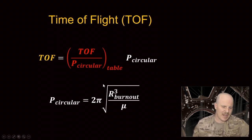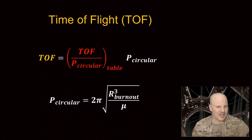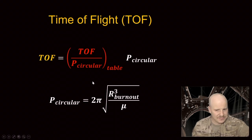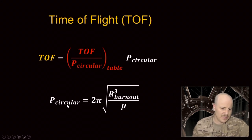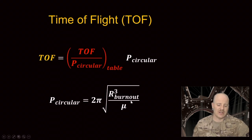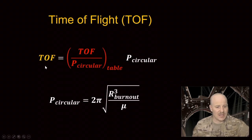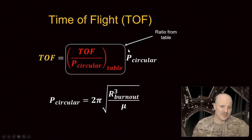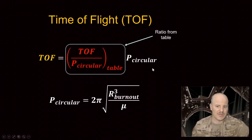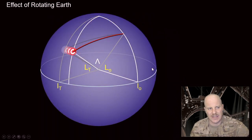In the previous example, I wrote 0.58 of P circ as the time of flight. P circ is actually the circular orbit period. We have equations for the period, but in this case we assume a circular orbit and use our burnout radius for the orbit dimension. So I calculate P circ and then multiply by that ratio from the chart — 0.58 multiplied by P circ gives us our actual time of flight. That's how you use the chart to calculate time of flight.